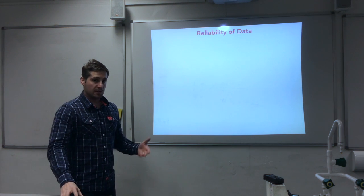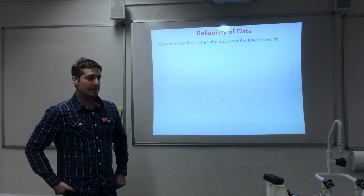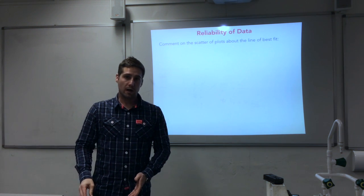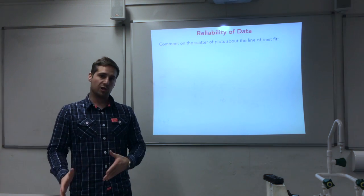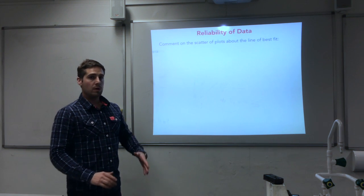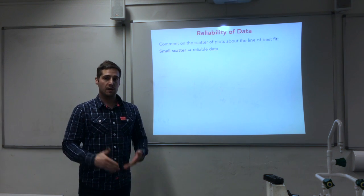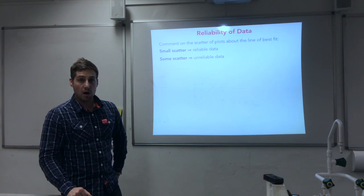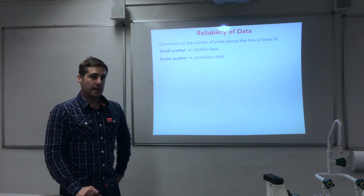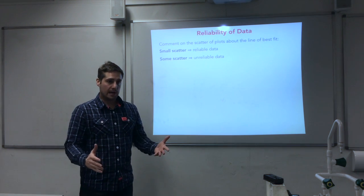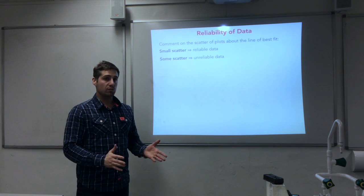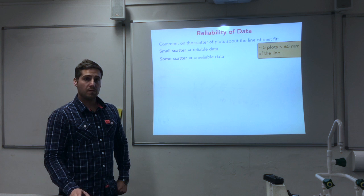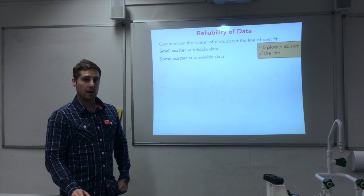Let's start off with the easy bit, which is looking at the reliability of data. Here you are looking at the scatter of your plots about your line of best fit and judging the reliability based on that. It's quite simple — if you have a small scatter, then you've got reliable data, but if there is some scatter about the line of best fit, then you've got unreliable data. There's a rule of thumb — a good guide would be you want five plots within five millimetres of your line of best fit.